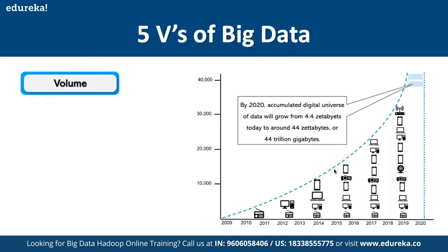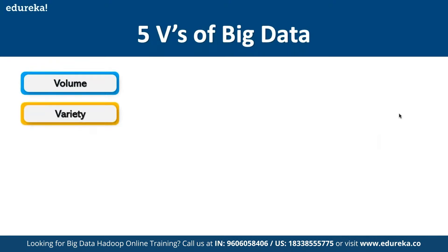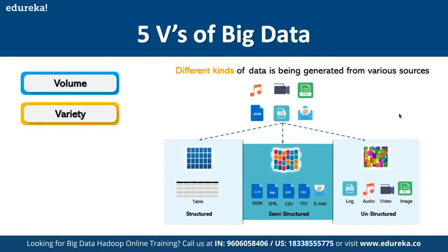The second V is Variety, which means data coming in different formats. We have structured data — meaning RDBMS or DBMS-like databases. We have semi-structured data like emails, CSV files, JSON scripts, and XML files. And then we have unstructured data which is basically all multimedia elements.